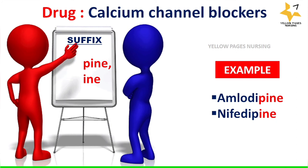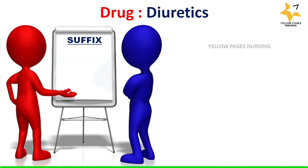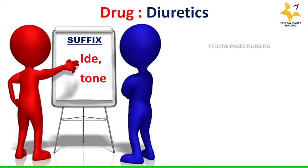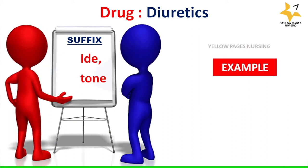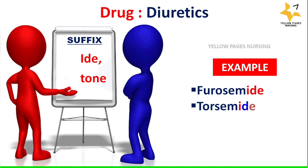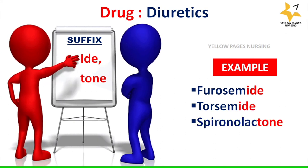Next come diuretics with the suffixes '-ide' and '-one'. Examples are furosemide, torsemide, spironolactone, etc.